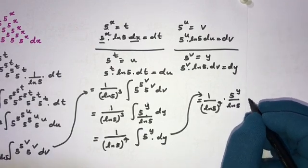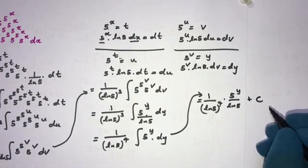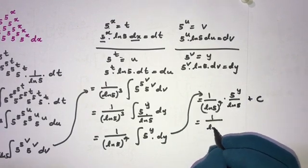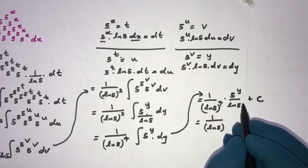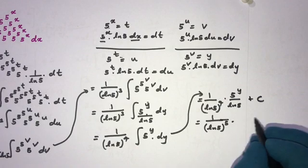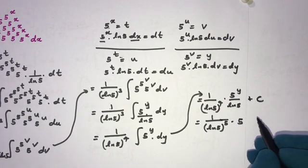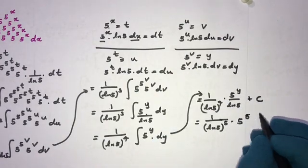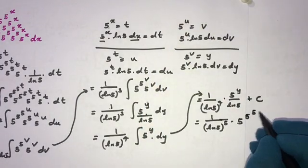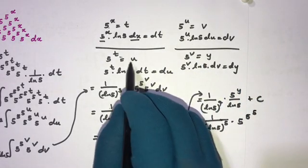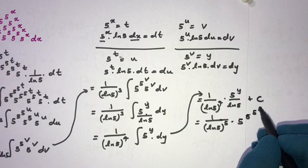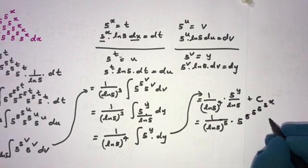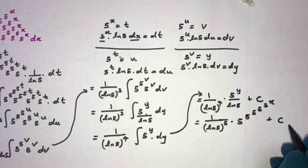Now we back-substitute: y equals 5^v, v equals 5^u, u equals 5^t, and t equals 5^x. So the final answer is (1 over ln 5)⁵ times 5 to the 5 to the 5 to the 5 to the 5 to the x, plus C. If you like this video, please subscribe to this channel. Thank you for watching.